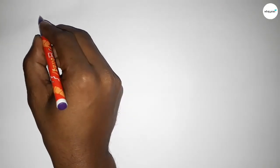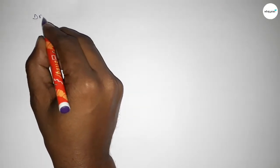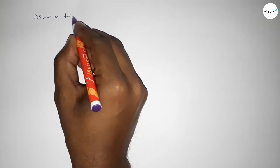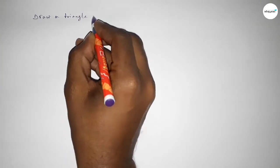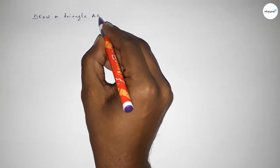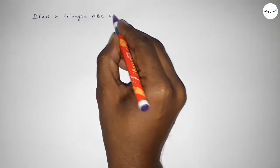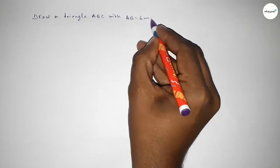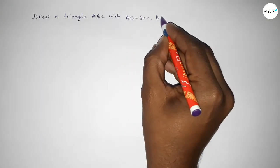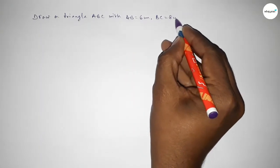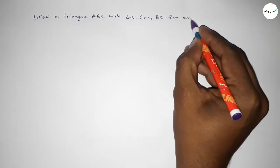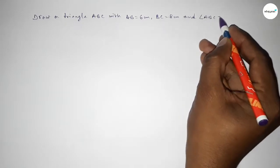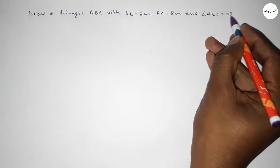Hi everyone, welcome to SISR Classes. Today in this video we have to draw a triangle ABC with AB equal to 6 centimeters, BC equal to 8 centimeters, and angle ABC equal to 65 degrees. So let's start the video.